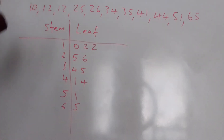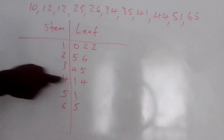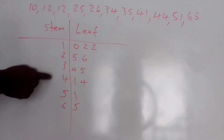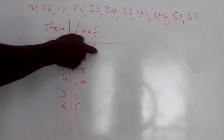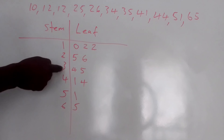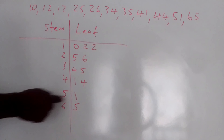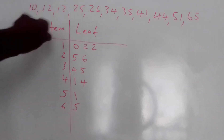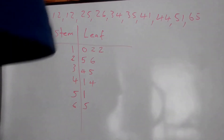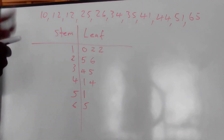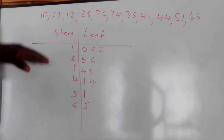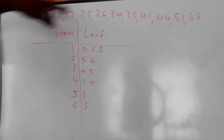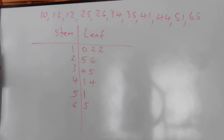This is how we create a stem and leaf plot using the numbers above. If you look now, the stem and leaf plot is displaying all these numbers: 10, 12, 12, 25, 26, 34, 35, 41, 51, and 65. Very easy! Stem and leaf is a table used to display data — this is how we create a stem and leaf plot.